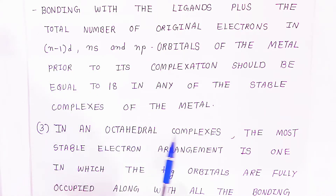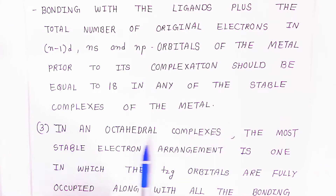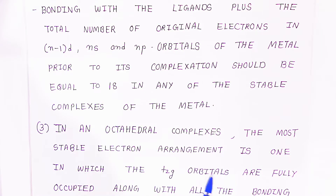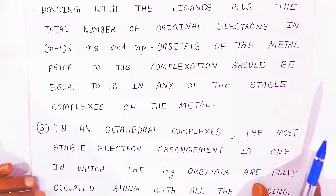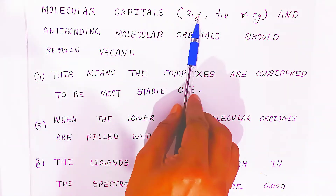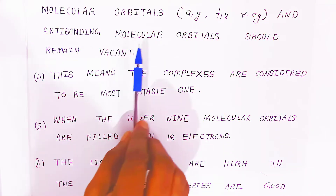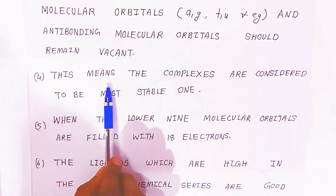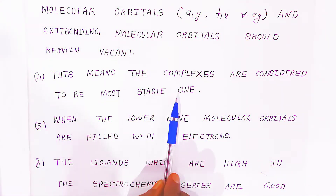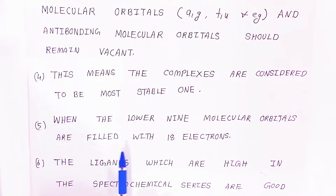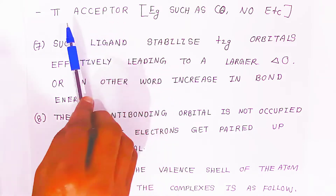In octahedral complexes, when a metal has 6 ligands, that is called an octahedral complex, ML6. In octahedral complexes, the most stable electronic arrangement is one in which the t2g orbitals are fully occupied along with all the bonding molecular orbitals — such as a1g, t1u, and eg — and the anti-bonding molecular orbitals remain vacant. Then we can say the complex will be stable, when the lower 9 molecular orbitals are filled with 18 electrons.